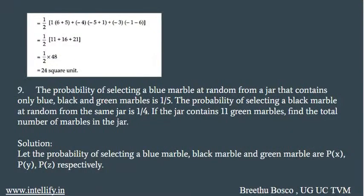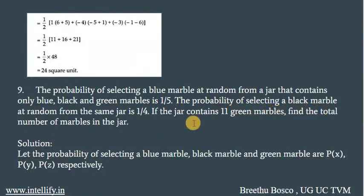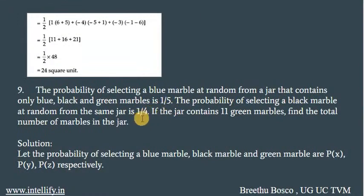Question number 9: the probability of selecting a blue marble at random from a jar that contains only blue, black and green marbles is 1/5. The probability of selecting a black marble at random from the same jar is 1/4. If the jar contains 11 green marbles, find the total number of marbles in the jar.